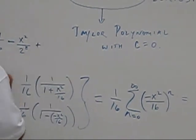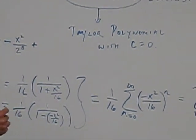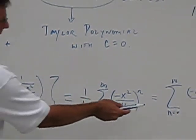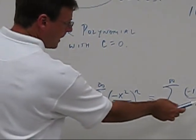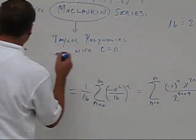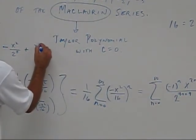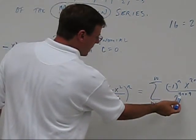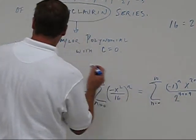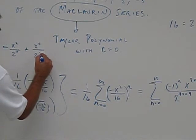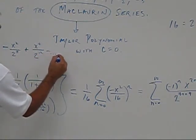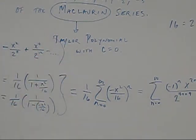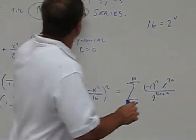The next term is a plus. The next term, when n equals 2, I get positive x to the 4th. And on the bottom, when n equals 2, I get 2 to the 12th. And it continues on. But I'm going to stop, because if you look ahead.